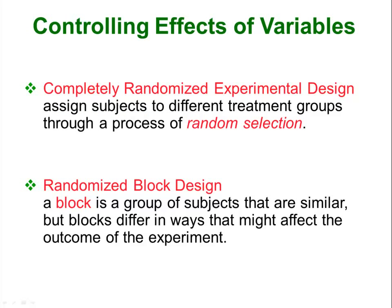To control the effects of variables: a completely randomized experimental design assigns subjects to different treatment groups through a random selection process, which helps control for various effects. A randomized block design blocks subjects based on similarity — for example, blocking by smoking levels (low, medium, and high) and then running an experiment on those three blocks helps you see if smoking has an effect.